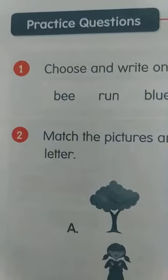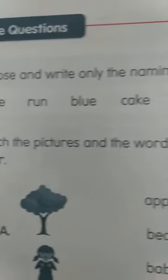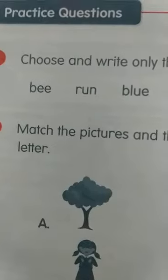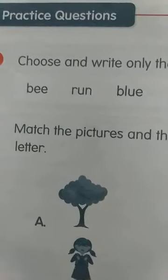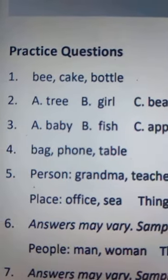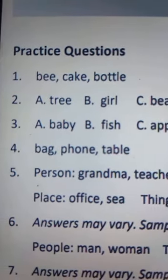Practice question: Choose and write only the naming words. Children, I am sharing the answer. B — cake, bottle.